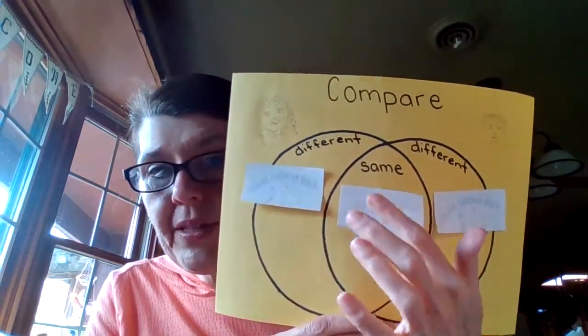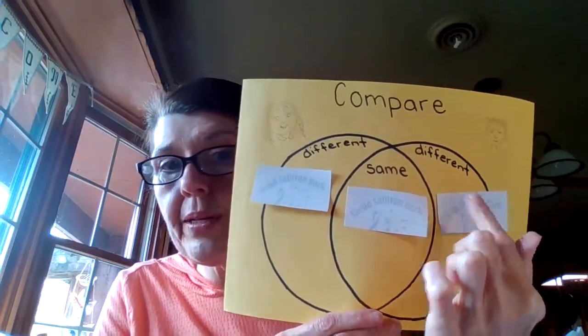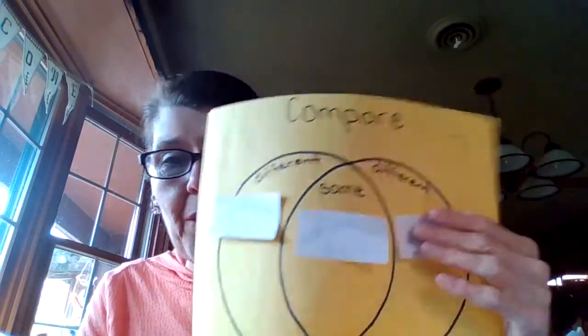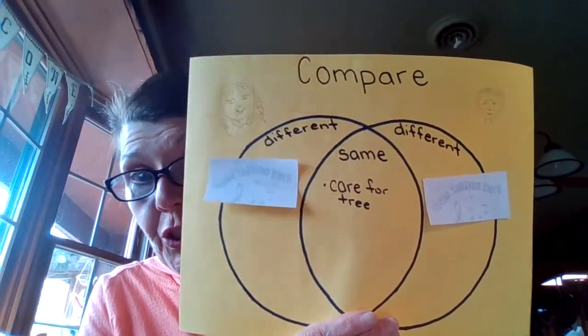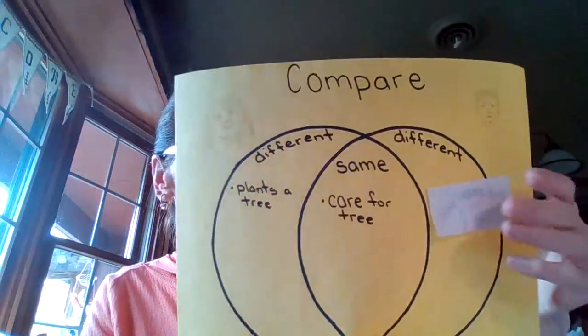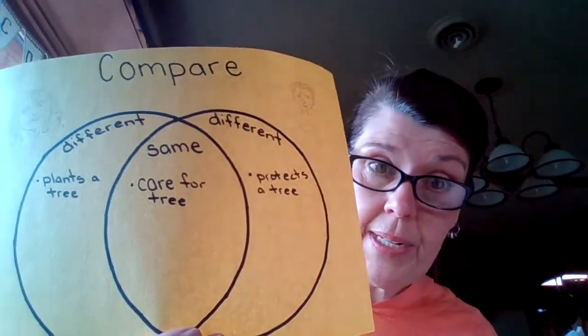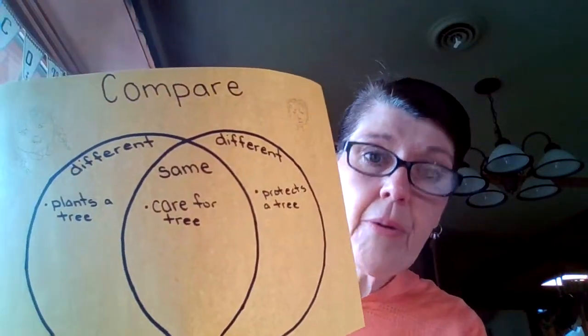Over here I drew my best Katie that I could, and over here I drew the boy from Family Tree. You've worked with Venn diagrams before, I know. Now the reason I have these sticky notes is because I got you started. I have a way Katie and the boy are the same, a way Katie is different from the boy, and a way the boy is different from Katie. So let's peel off how they're the same — they both care for trees, for sure. Here's one thing that's just about Katie: Katie plants a tree. And here's something that's just about the boy: the boy protects a tree. I want you to make circles like this and come up with a few other ways how they're the same and how they're different.